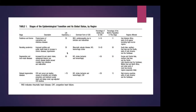In the pestilence and famine stage, malnutrition and infectious diseases dominated, average life expectancy was 35 years, and CVD forms like RHD or cardiomyopathy represented only 5–10% of deaths. About 11% of the world's population remains in this stage, in regions like sub-Saharan Africa. In receding pandemics, nutrition improves, life expectancy increases, but cardiovascular disease deaths also begin to rise.